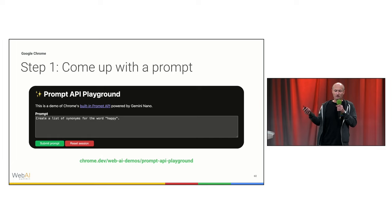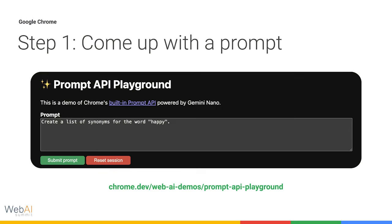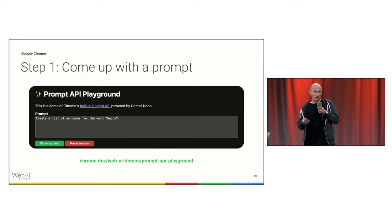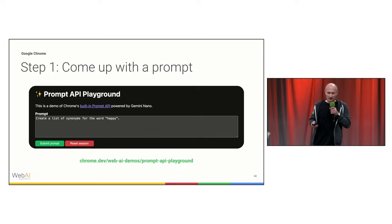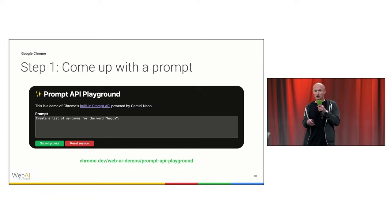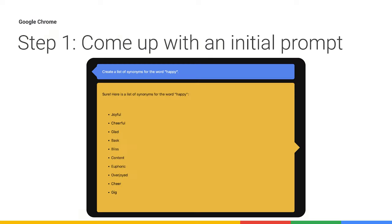The first step is to come up with a prompt. For this you can use the Prompt API Playground, found on chrome.dev. My first shot at a prompt is simply: 'Create a list of synonyms for the word happy.' Later I would make this dynamic, but for now I hard-code happy. On the Playground there is a red reset button, which is important because it lets me reset the session — we'll see why in the next couple of slides.